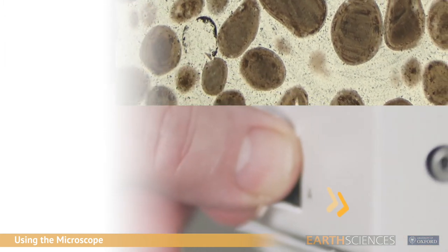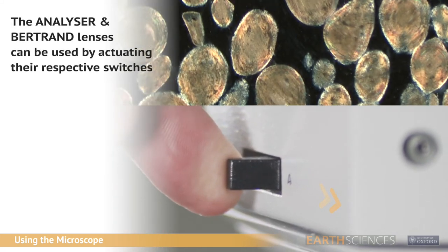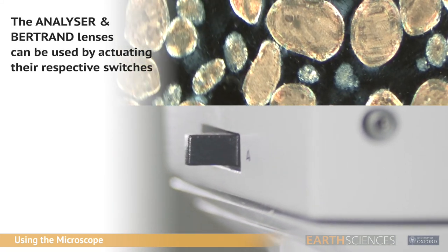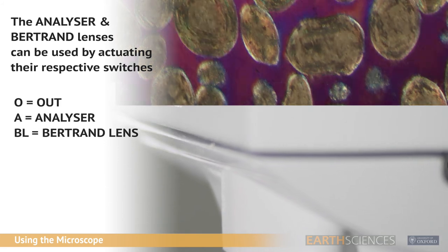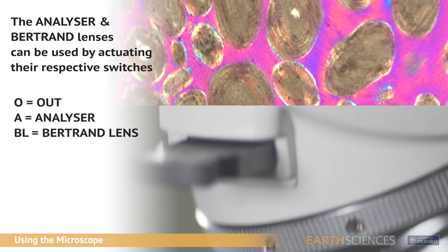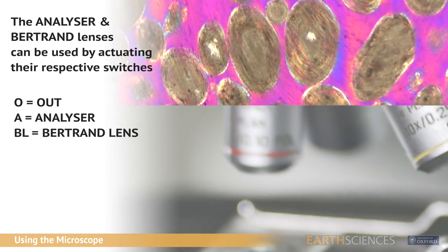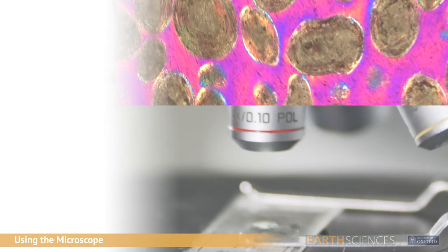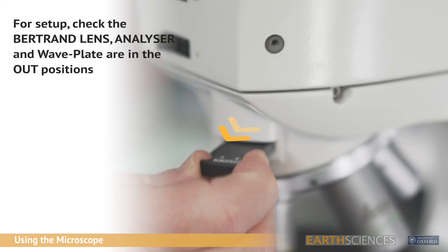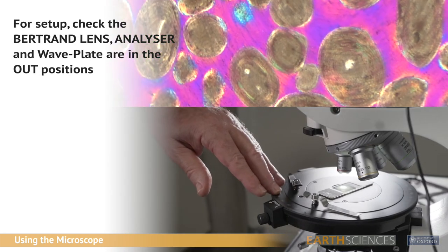Between the binocular viewing tube and objectives is the analyzer and Bertrand lens units. Both are operated by lateral switches. O indicates out and A or BL the in positions. For initial setting up, ensure that both are in the out position. Also check that the wave plate is in the out position.